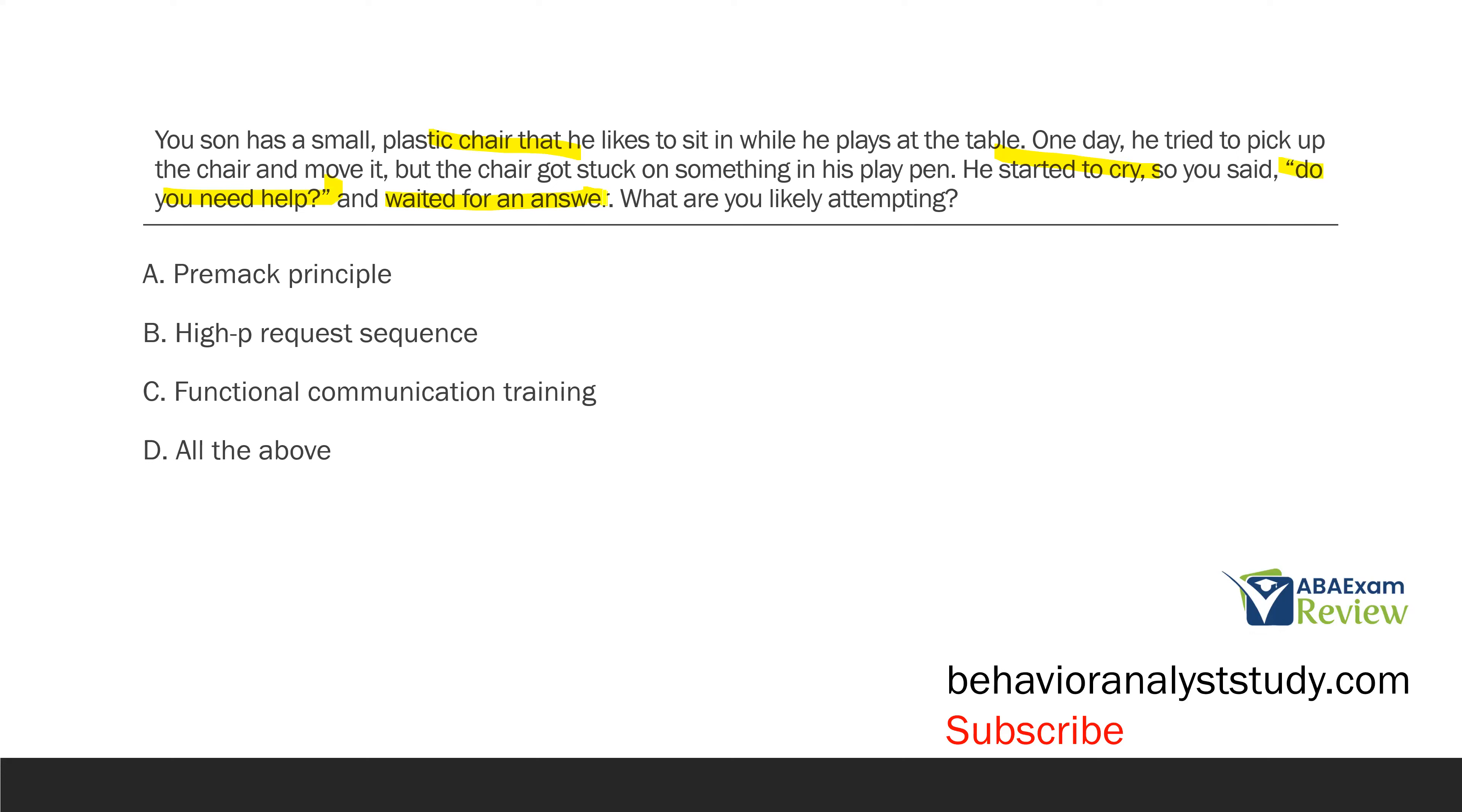So, what are you likely attempting here? A, the Premack principle. Well, the Premack principle, or Grandma's Law, says, I will give you the opportunity to engage in a highly preferred response or activity as reinforcement for engaging in a low preferred response or activity. It's not really what you're doing here. You're not really setting up that contingency because you're not offering anything. You've just used this incidental teaching to set up a moment where you can teach your son how to ask for help. So, same thing with B, a high P request sequence. You're not delivering these high probability requests followed by that low probability request. It's not what is occurring here. What's occurring is you're teaching this functional communication training using naturalistic teaching. By engaging your son when he starts to cry and you know he needs help, you can ask, do you need help and wait? This is a great example of naturalistic teaching to teach functional communication training. When he gives an answer, then you can reinforce. So, what are you likely attempting? C, functional communication training.